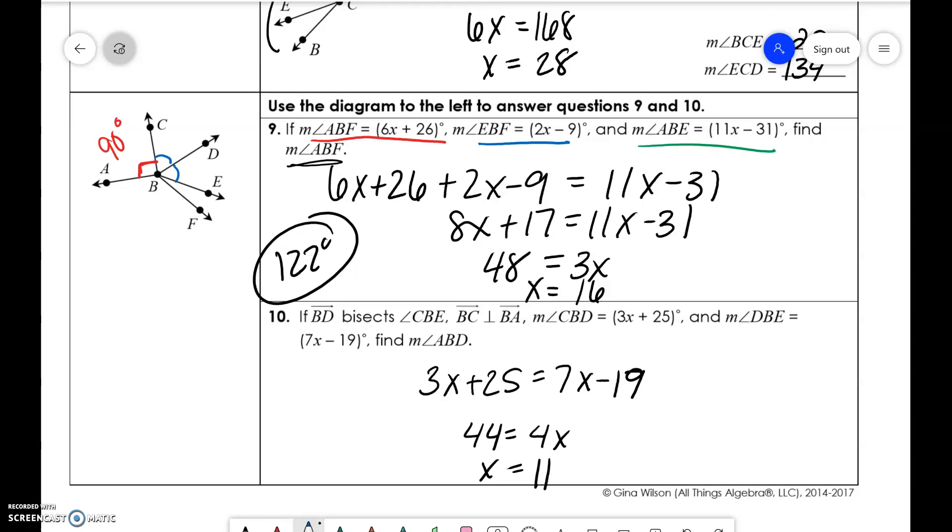We need to figure out what that little blue angle is for CBD. So if we do 3 times 11 plus 25, we get 58. So that's 58. So all we're going to do is 90 plus 58 is equal to 148. And that's it. All right. See you later.